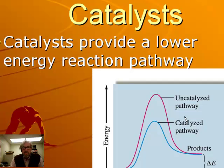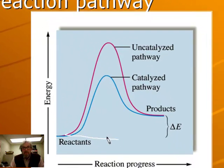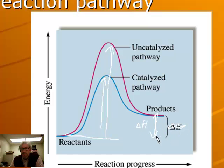Catalysts provide a lower-energy reaction pathway as an alternative to the uncatalyzed route. On an energy diagram, the catalyzed pathway has a lower activation energy hill, while delta-H remains the same — the thermochemistry of the reaction is unchanged. Because the energy barrier is lower, more particles have sufficient kinetic energy to react at a given temperature, so the reaction rate increases with a catalyst present.